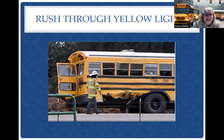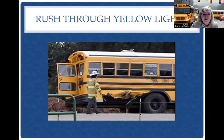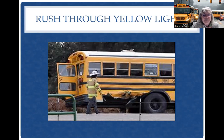Watch the countdown on crosswalks — some aren't accurate, and you know which ones are on your route. A stale green light, one that's been green for a long time, signals that the light is going to change soon. Watch those stale green lights and slow down. Don't push the accelerator when you see a yellow light.